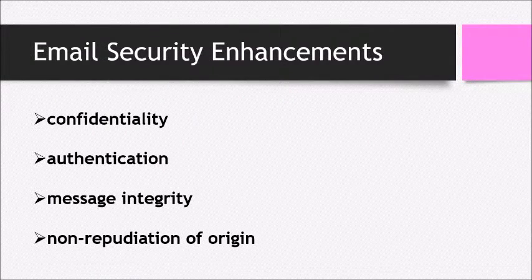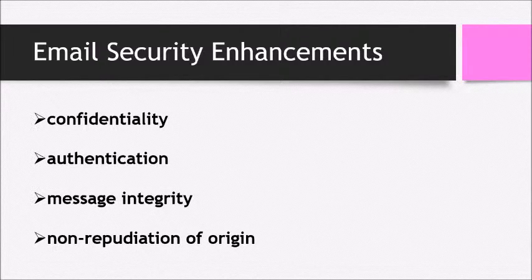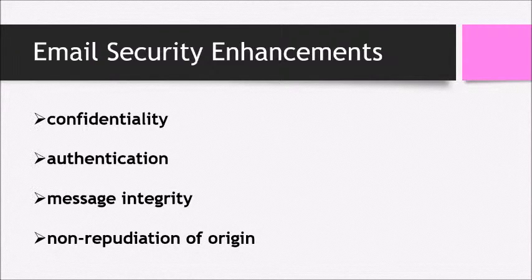Hackers can disclose our message content, so first we need to protect our messages from disclosure, since our messages are very confidential and should only be known between sender and receiver. The first security enhancement is protection from disclosure. Secondly, hackers may change authentication details such as the sender's identity, so we should maintain authentication of the sender. Next, we should protect message integrity by preventing modification of the original content. Also, we protect from denial by the sender to keep non-repudiation of the origin.